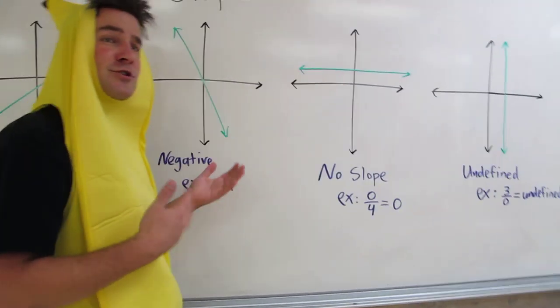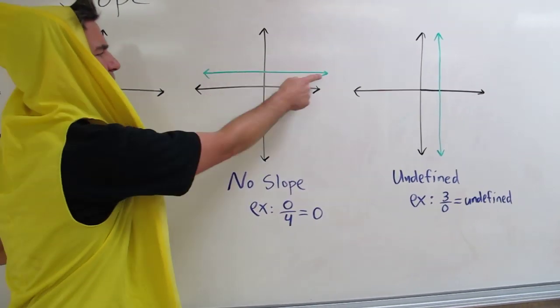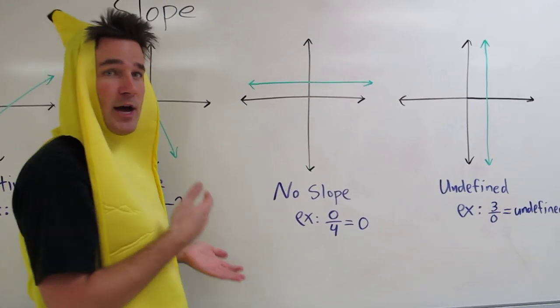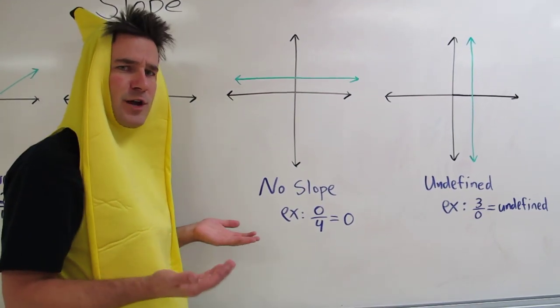Now there's two strange slopes we encounter. Here's the first one, no slope. From left to right, we see the line is not going up or down. So we say this is a slope of 0 or no slope.